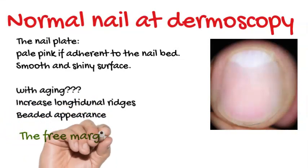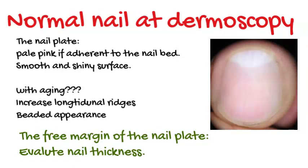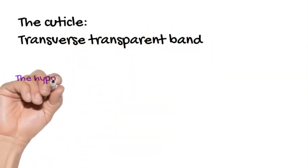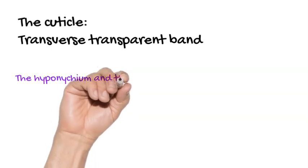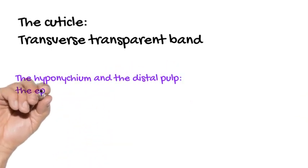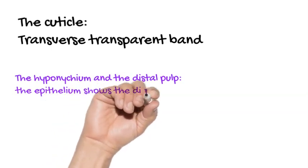We must also examine the free margin of the nail plate to evaluate nail thickness. The cuticle appears as a transverse transparent band. The hyponychium and the distal pulp are also examined — here the epithelium shows the digital creases.